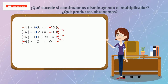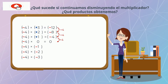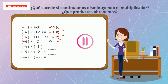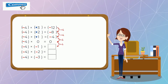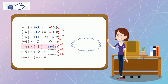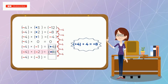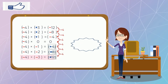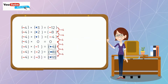¿Qué sucede si continuamos disminuyendo el multiplicador? ¿Qué productos obtenemos? Pausa el video e intenta encontrar los valores que deben ir en los recuadros. Si continuamos con el patrón, es decir, aumentando en 4 el producto, obtenemos que menos 4 por menos 1 es igual a más 4. Menos 4 por menos 2 es igual a más 8. Y menos 4 por menos 3 es igual a más 12.